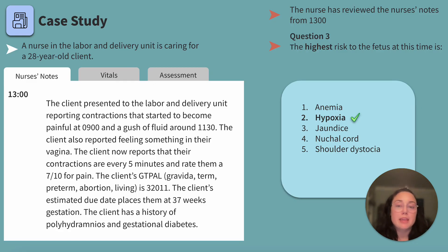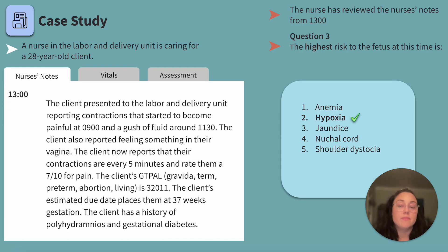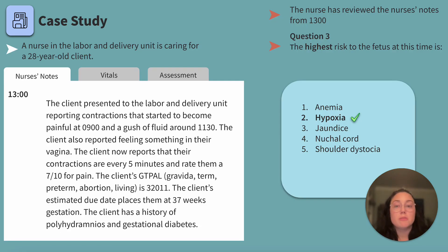For the other options: anemia — interrupted blood flow wouldn't make anemia a higher risk than hypoxia. Jaundice has many risk factors ranging from traumatic births to assigned gender, but wouldn't be a higher priority than hypoxia. Nuchal cord — the umbilical cord wrapped around the baby's neck — may not occur with cord prolapse since the cord has slipped past the baby's head. Shoulder dystocia — where the baby's head is born but shoulders can't pass through the pelvis — is also not the highest risk with a suspected cord prolapse.